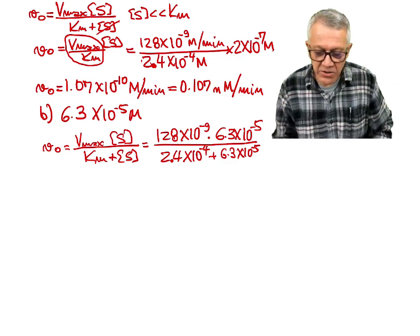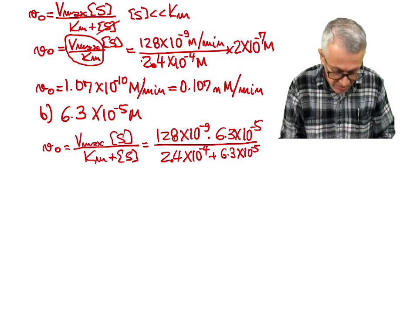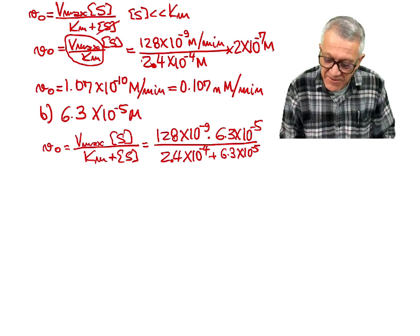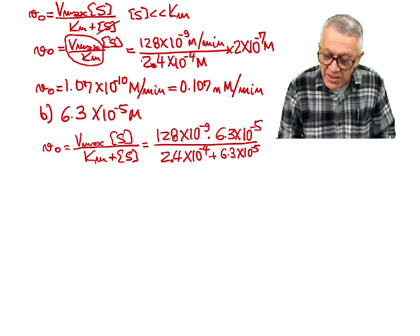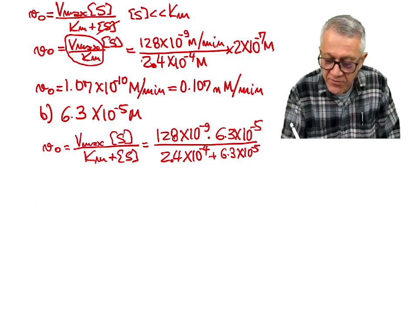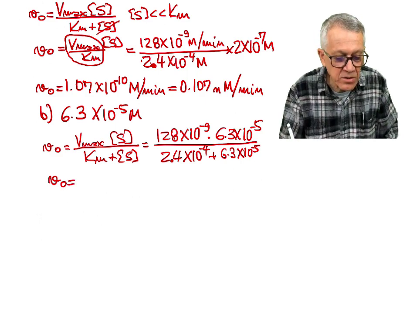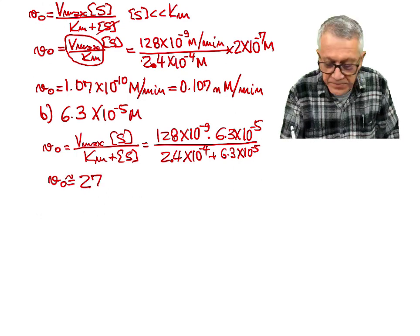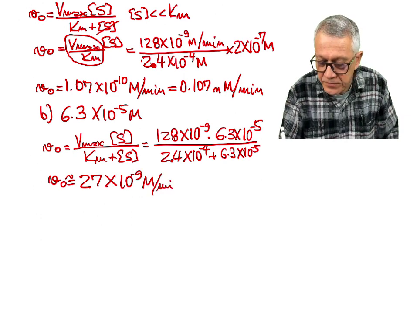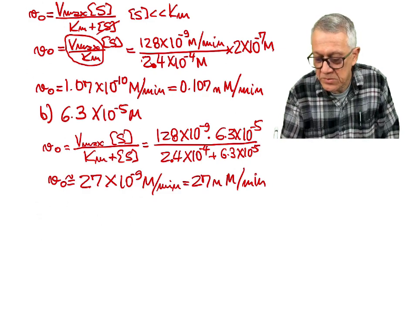Plugging these numbers into the calculator — making sure to use parentheses because there is a sum in the denominator — that gives us V0 approximately equal to 27 times 10 to the minus 9 molar per minute, or 27 nanomolar per minute.